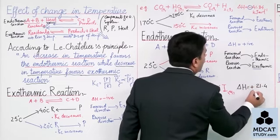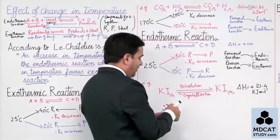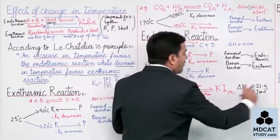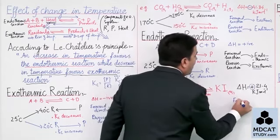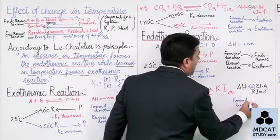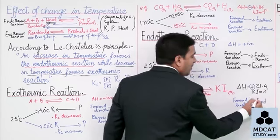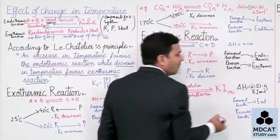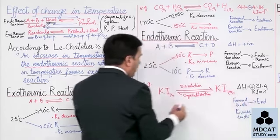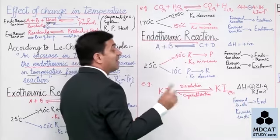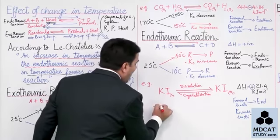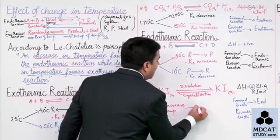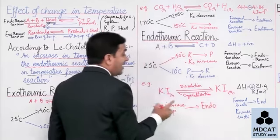Delta H value is positive, so if delta H of a reversible reaction is positive, then the forward reaction is endothermic, and the reverse reaction is exothermic. So forward direction is endothermic. According to Le Chatelier's Principle: an increase in temperature favors the endothermic reaction — which is the forward direction.